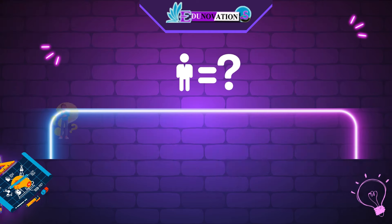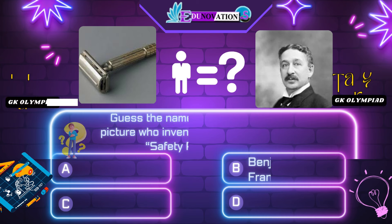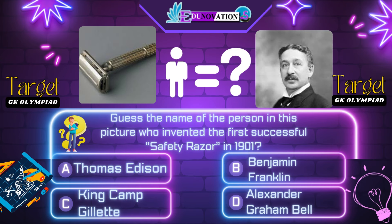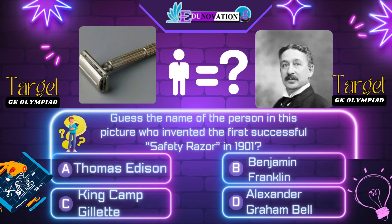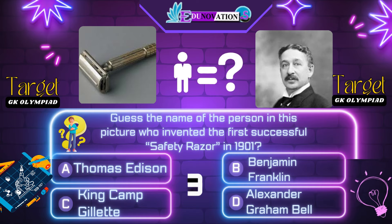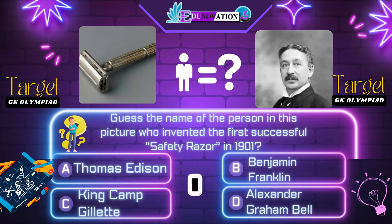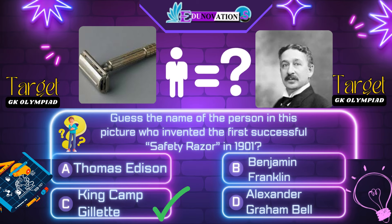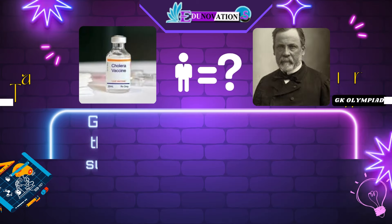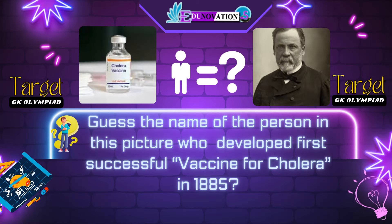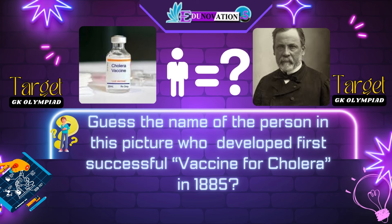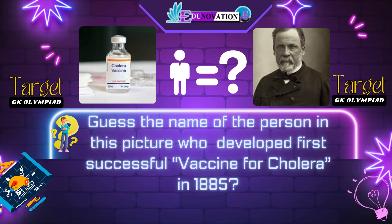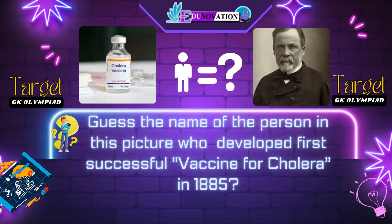Next question. Guess the name of the person in this picture who invented the first successful safety razor in 1901. Your options are: A. Thomas Edison, B. Benjamin Franklin, C. King Camp Gillette. Time's up. Correct answer is C. King Camp Gillette.